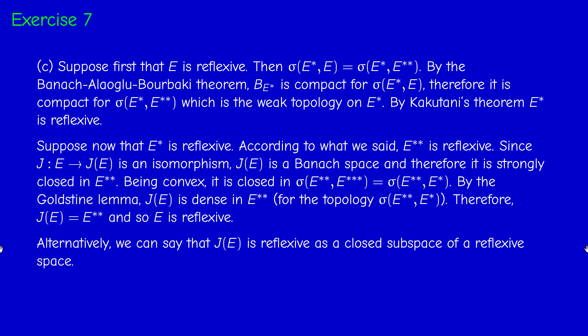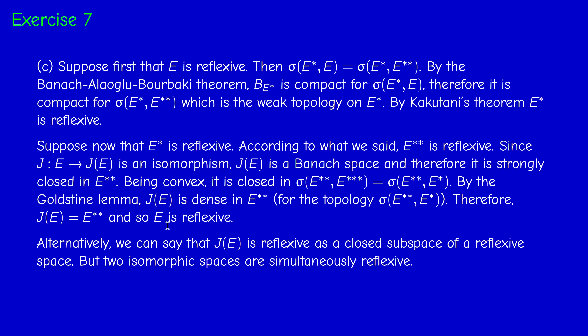There is another proof: J(E) is reflexive because it is a closed subspace of E double star, which is reflexive (since E* is reflexive implies E** is reflexive). And J(E) is a strongly closed subspace of E double star, so it's itself reflexive. By exercise 6, two isomorphic spaces are simultaneously reflexive, so E is reflexive. This may be simpler than invoking the Goldstein Lemma.